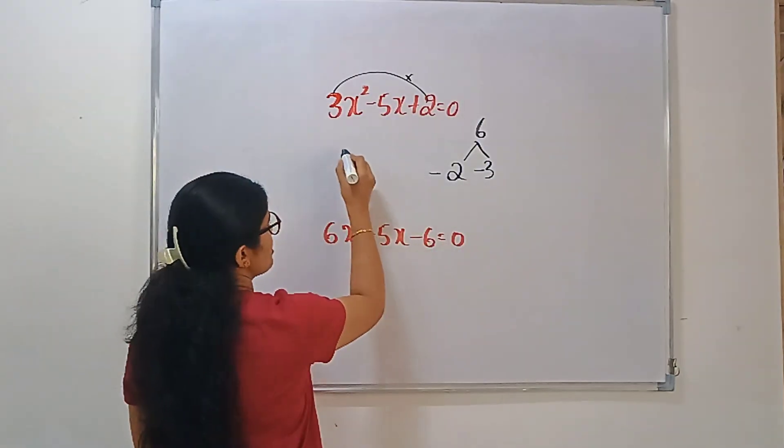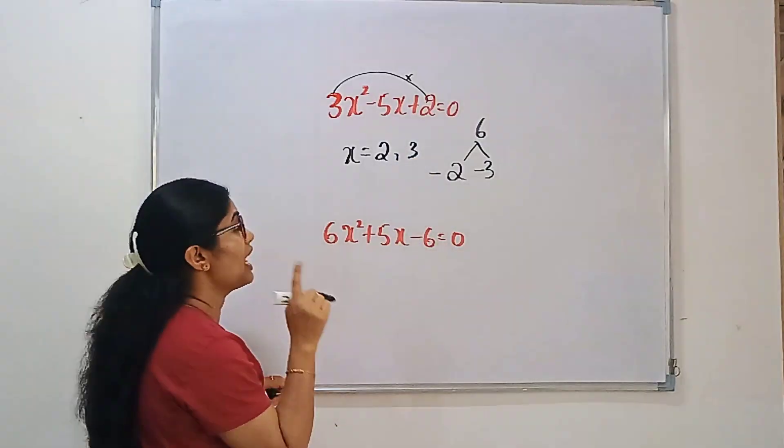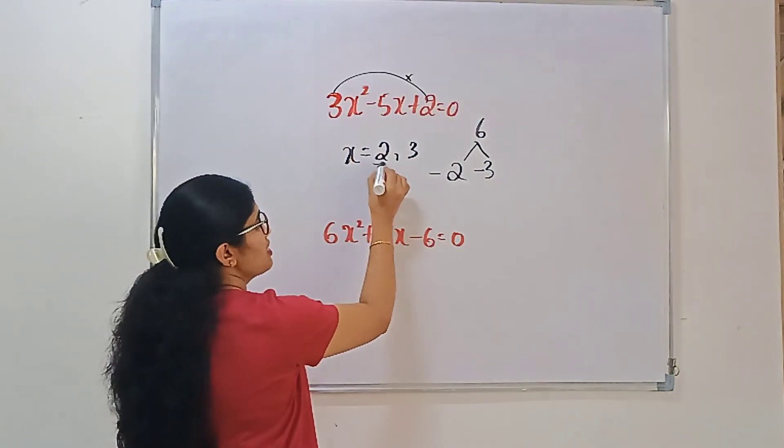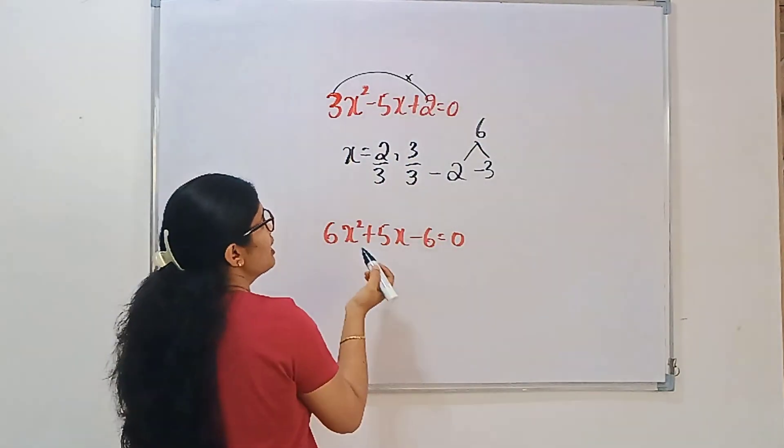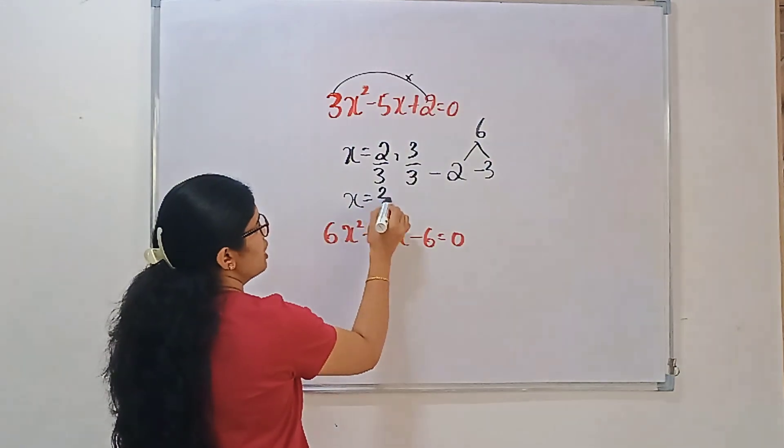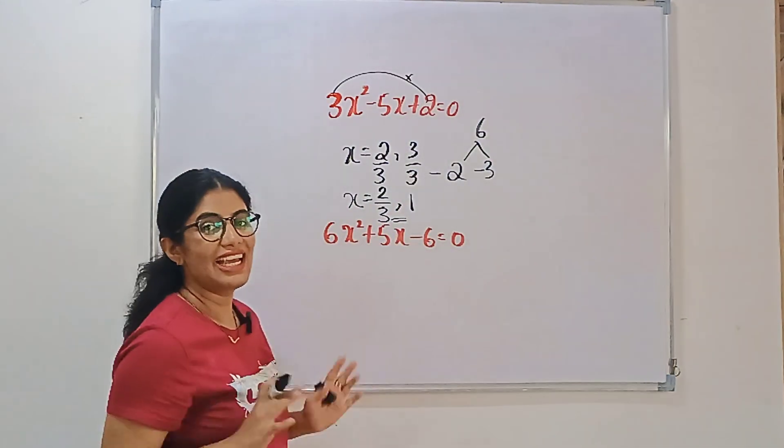Then just reverse the signs. Then x is equal to 2, 3. Then after that, we should divide by this coefficient. 2 by 3, 3 by 3. Then x is equal to 2/3, 3 by 3 means 1. So that's the answer.